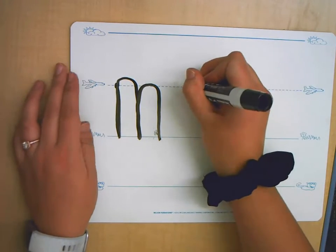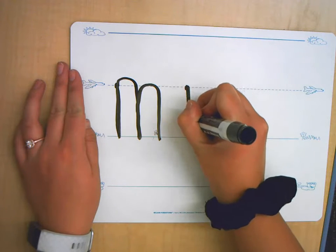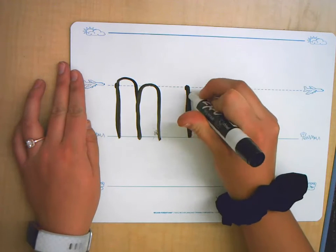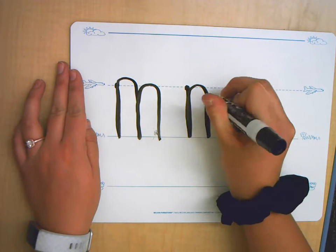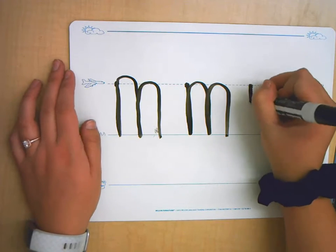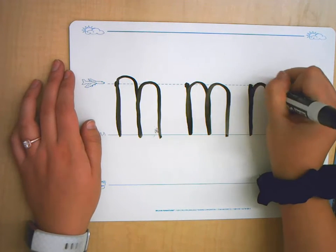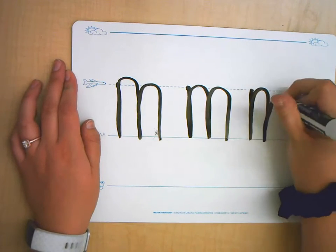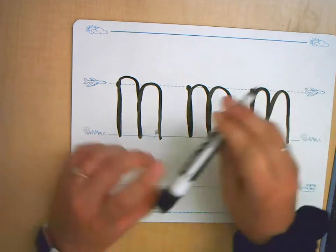Okay, so let's start again at the plain line down to the grass line. You're going to go back up and make those two humps back down to the grass line just like that. Again, plain line down to the grass line. Make your two humps down to the grass line and you're done.